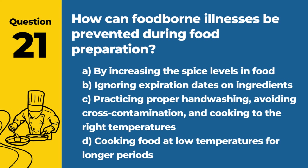Question 21. How can foodborne illnesses be prevented during food preparation? Answer: C. Practicing proper hand-washing, avoiding cross-contamination, and cooking to the right temperatures. These practices are fundamental in preventing foodborne illnesses by controlling the risk factors associated with food contamination and undercooking.